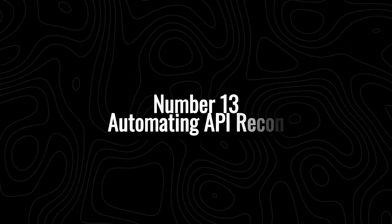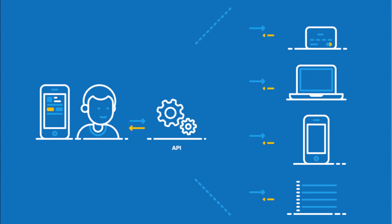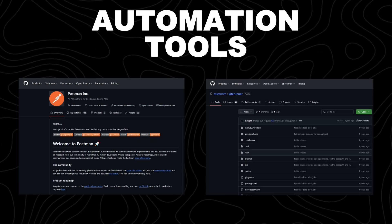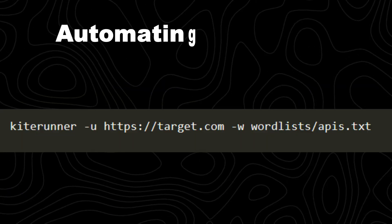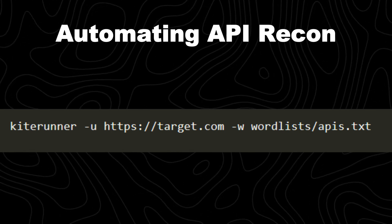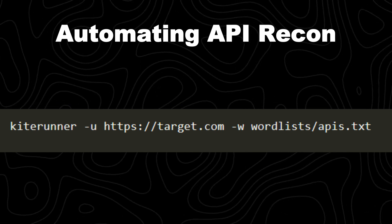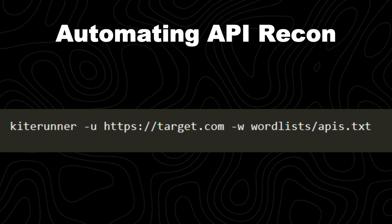Number 13: automating API recon. APIs often contain hidden endpoints, sensitive data exposure, and security flaws that can be exploited in bug bounty programs. Instead of manually searching for API endpoints, automation tools like Postman and Kite Runner help discover and analyze APIs faster and more efficiently. This command automates API endpoint discovery using Kite Runner, a tool designed for brute-forcing API paths. You specify the URL and it uses a word list of common API endpoints to brute-force.